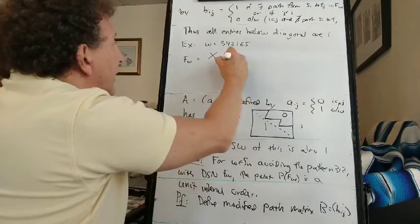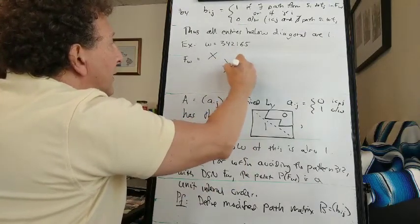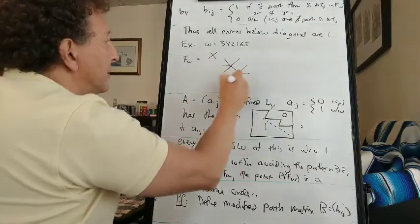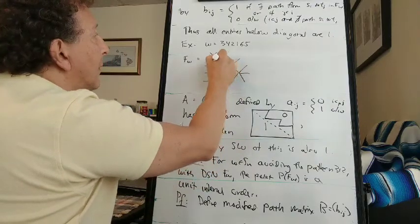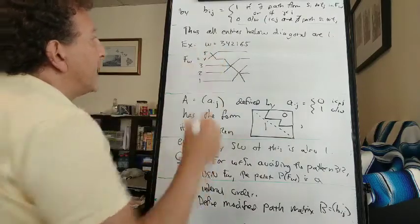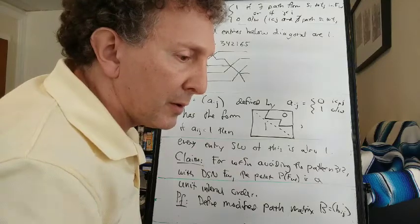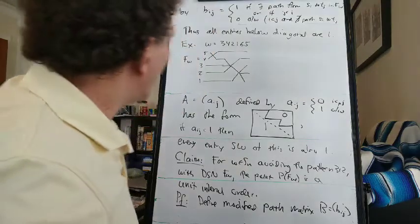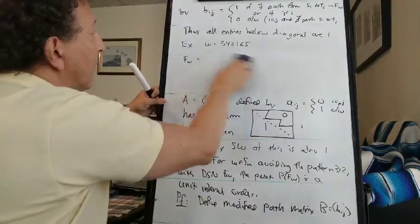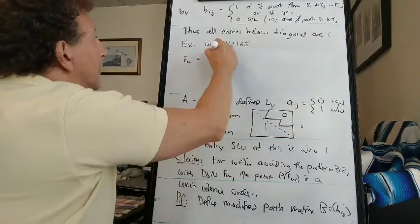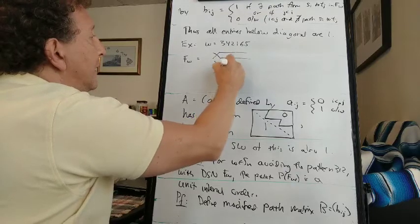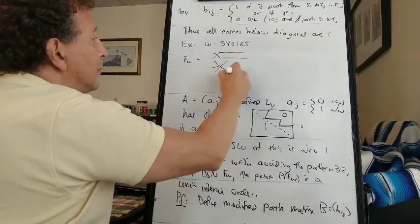But then those two paths get smushed. Here we go: one, two, three, four, five. Oh, I wanted to have this completely disjoint. Let me draw this again. The star here and then not touching it, two more stars like this.